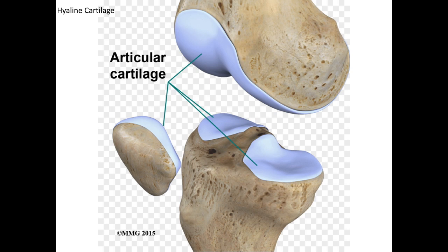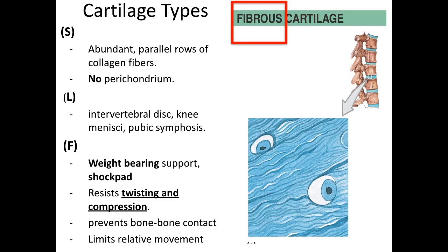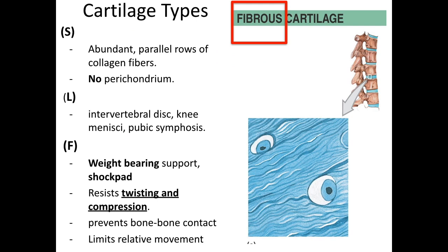Articular cartilage, which caps the ends of bones and provides cushioning, requires a slippery surface and so does not contain the perichondrium. In weight-bearing joints more strength is needed, so there are extra cartilage pads that are more like a combination of hyaline cartilage and the dense regular connective tissue that makes up ligaments. This is fibrocartilage, found in the meniscus of the knee, between the vertebral bones, and in the pubic symphysis — the joint that connects the two sides of the hip bones. These pads act as shock pads between the two bones, preventing bone-to-bone contact. While the cartilage matrix resists compression, the extra collagen fibers help resist twisting.